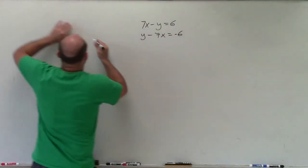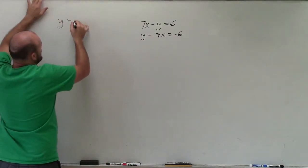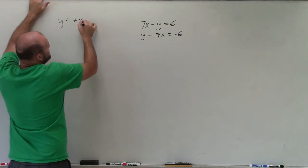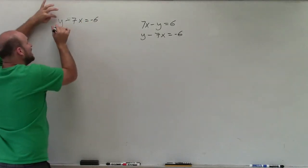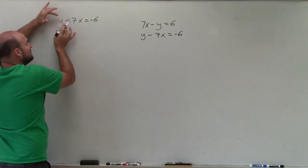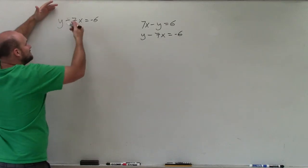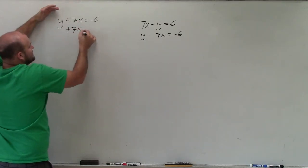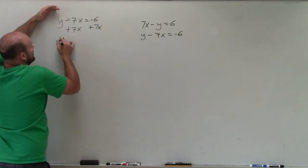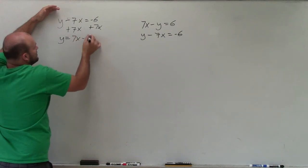So what I'm going to want to do is solve for y in this equation. So I have y minus 7x equals negative 6. So I want to isolate this variable. I want to get the variable by itself. So to do that, I have to undo subtraction, which would be adding 7x to both sides. So I have y equals 7x minus 6.